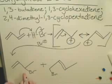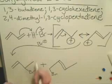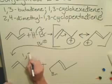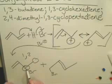So this right here is going to be called the 1,2 form because the hydrogen has added to the first carbon here and the bromine added to the second carbon next to it.